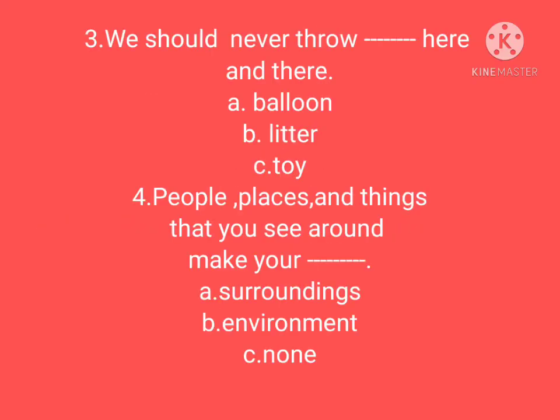Question three: We should never throw blank here and there. Option A: balloon. Option B: litter. Option C: toy. Question four: People, places, and things that you see around you are called blank. Option A: surrounding. Option B: environment. Option C: none.